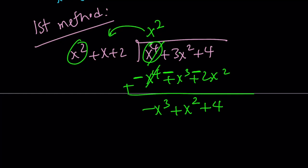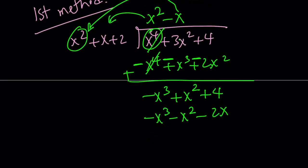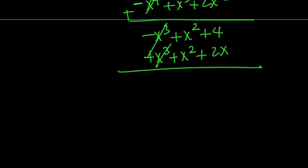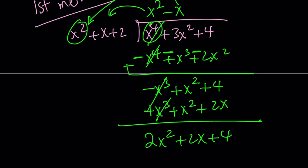Next, we're going to divide x squared into negative x cubed. And that goes negative x times. If you distribute or multiply negative x by this, you're going to get the following. Negative x cubed minus x squared minus 2x. And then what we have to do next is negate everything and add. So we're going to add like this. And we're going to get the following. X cubed, of course, needs to cancel out. X squared plus x squared is 2x squared. And then we have plus 2x plus 4.